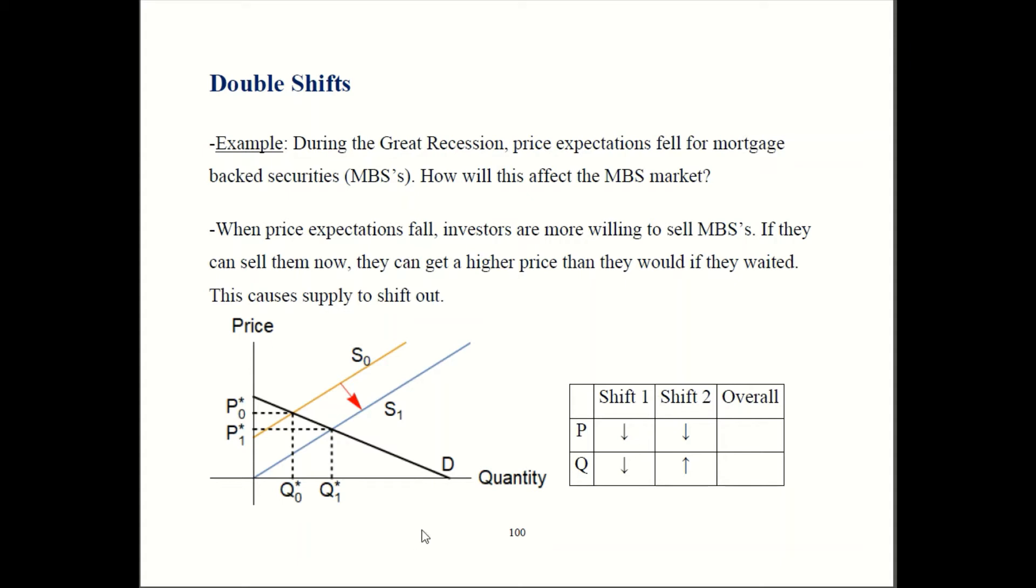Quantity is going to go up. Old equilibrium is back here, which means we have this quantity. New equilibrium is going to be over here, which gives you a bigger quantity. So quantity is going up. That gets an up arrow in our table.